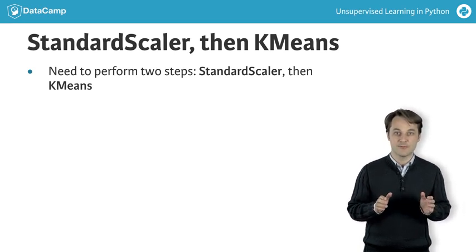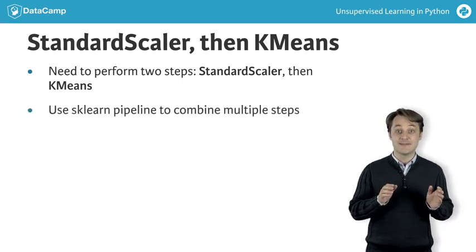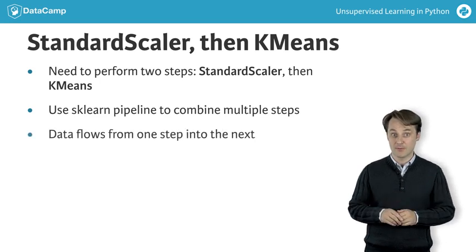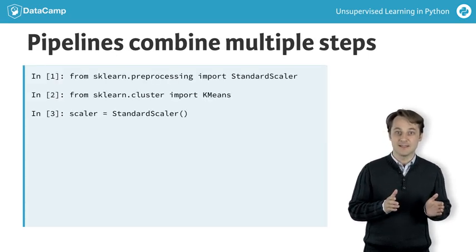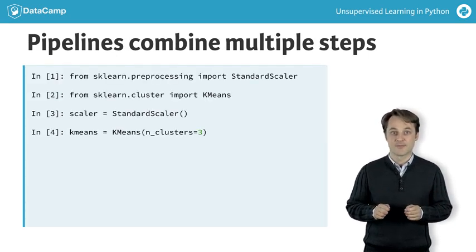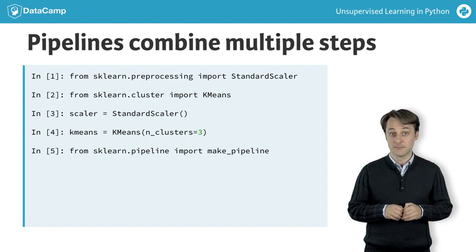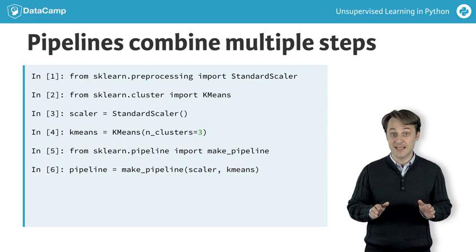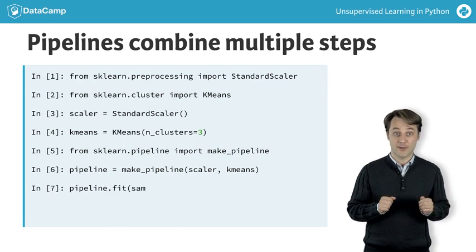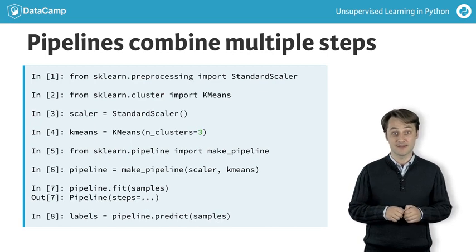This can be conveniently achieved by combining the two steps using a scikit-learn pipeline, where data flows from one step into the next automatically. The first steps are the same — creating a StandardScaler and a K-means object. After that, import the make_pipeline function from sklearn.pipeline, apply it to the scaler and the K-means objects, then use the pipeline's fit method and its predict method to obtain the cluster labels.